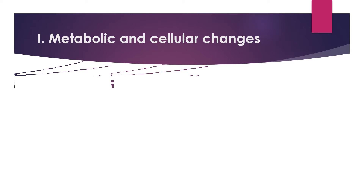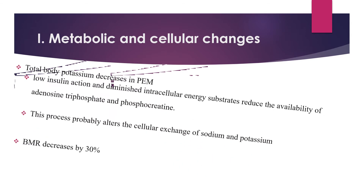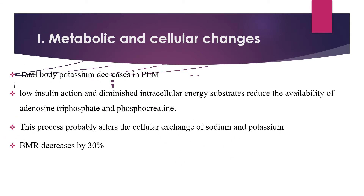Starting with metabolic and cellular changes: malnutrition causes total body potassium to decrease and total body sodium to increase. During severe acute malnutrition, there is deficiency of ATP function, so the sodium-potassium ATPase pump fails to work. Low insulin action and diminished energy substrates reduce the availability of ATP and phosphocreatine, which alters cellular exchange of sodium and potassium.